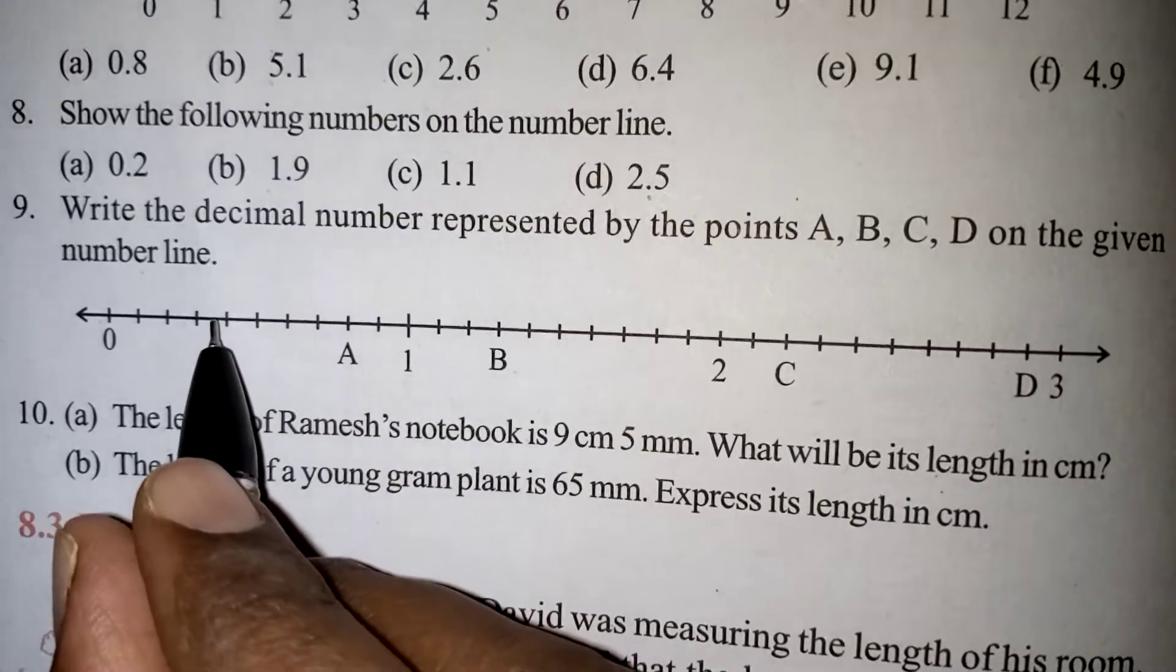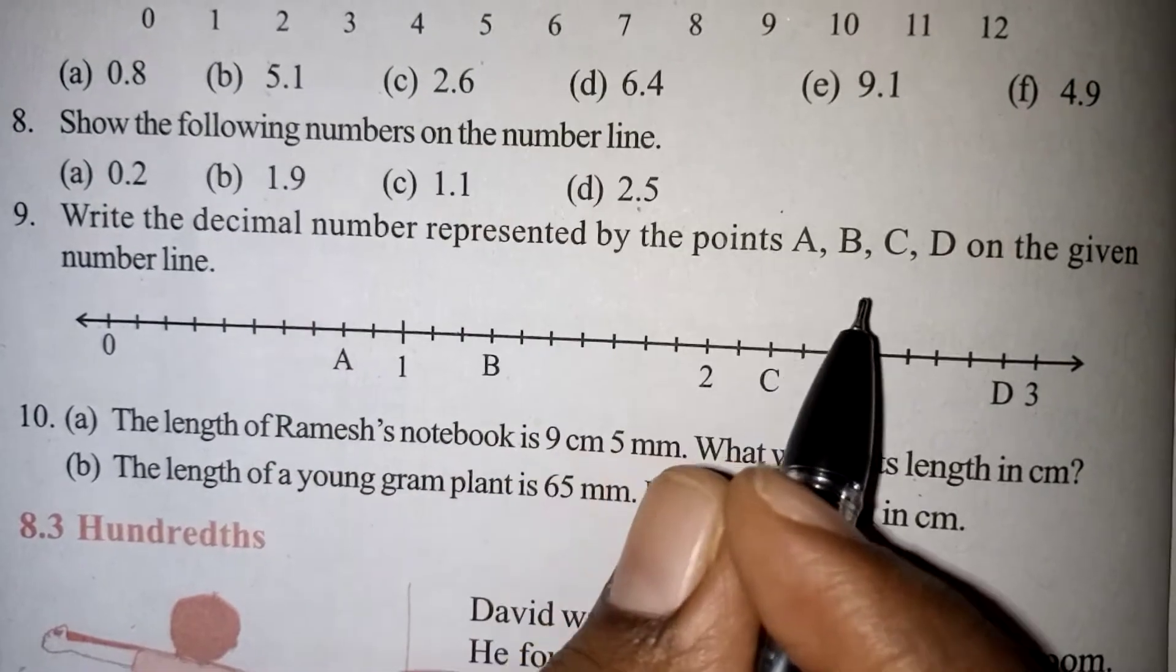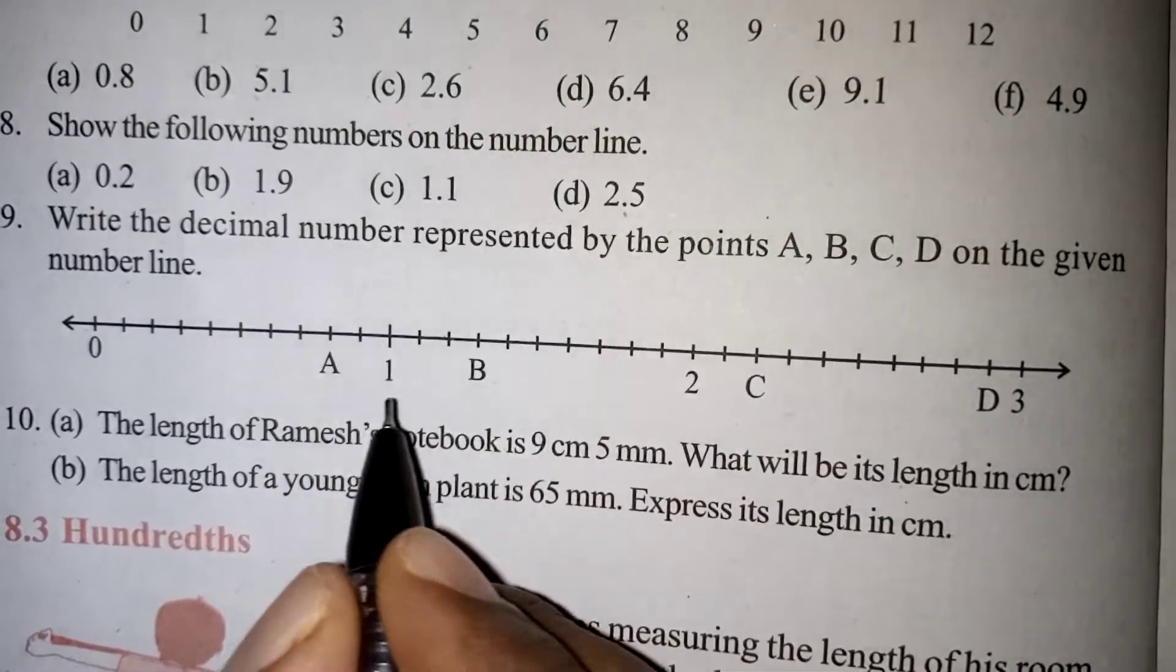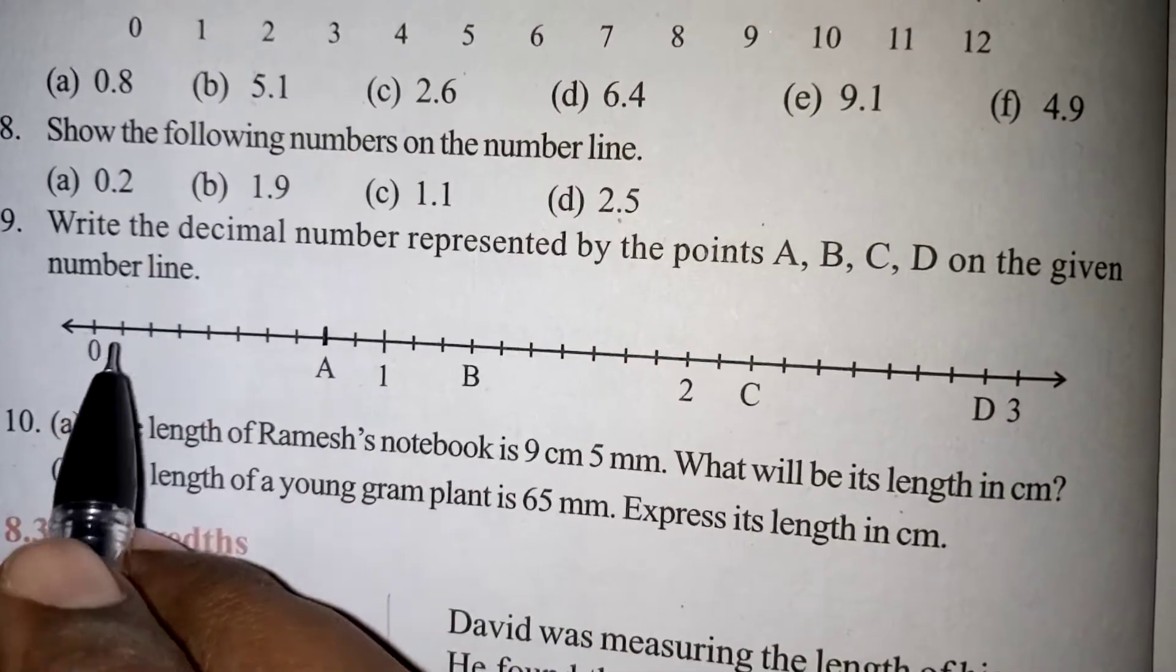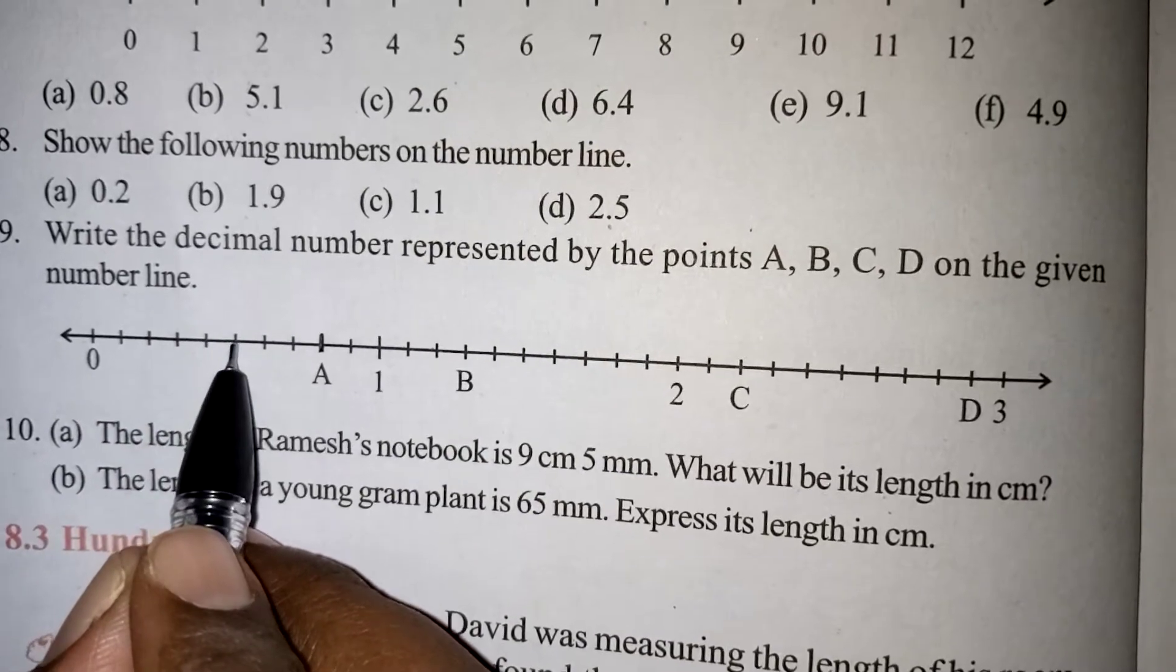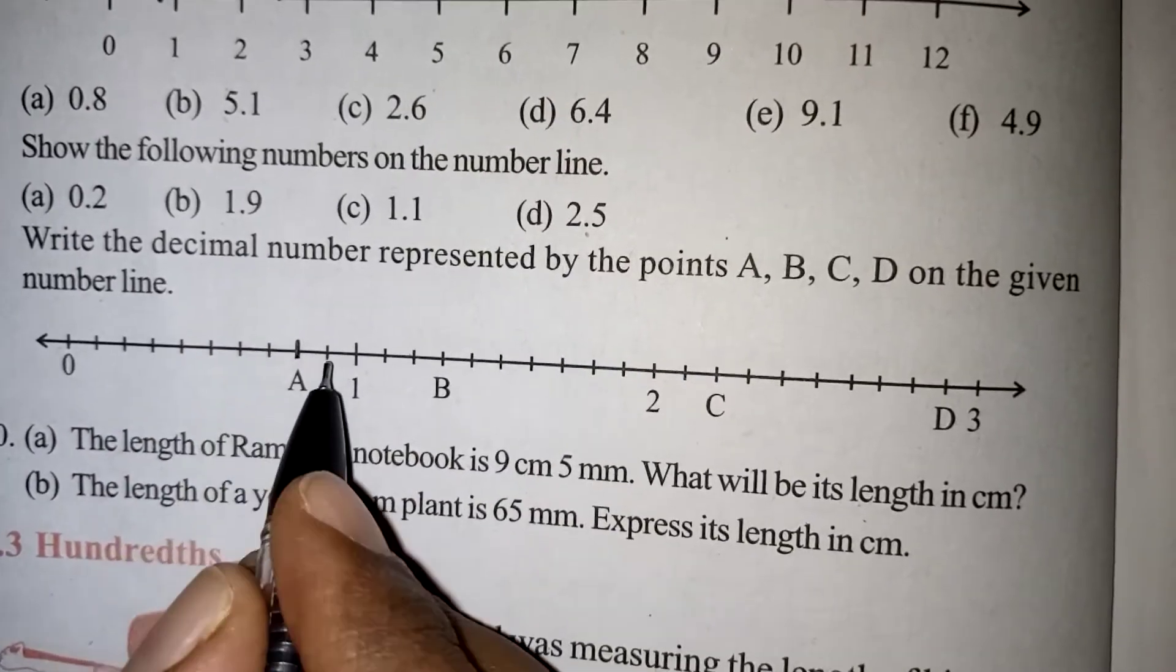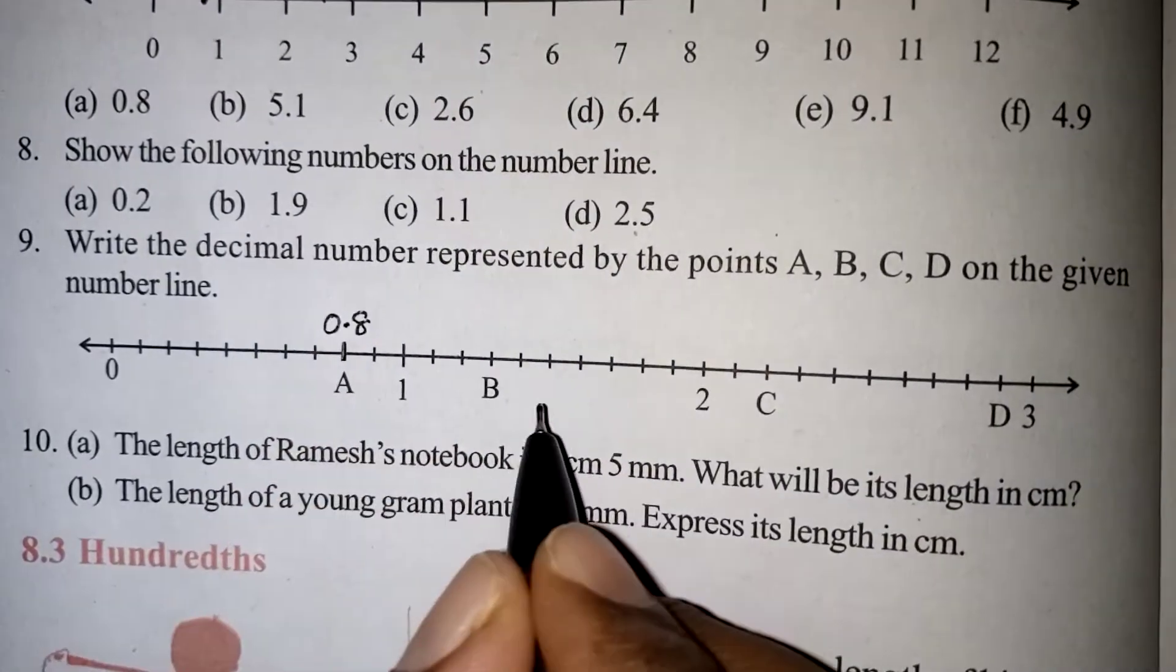Here, ninth question: Write the decimal number represented by the points A, B, C, D on the number line. Point A we have to find out. What we told in the beginning, after 0, we will be getting 0.1, 0.2, 0.3, 0.4, 0.5, 0.6, 0.7, this is 0.8. So A is the value 0.8.